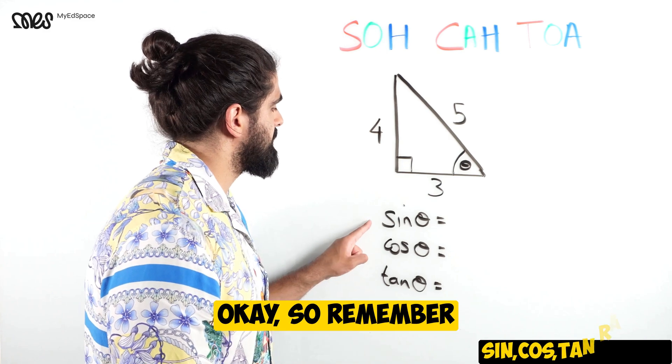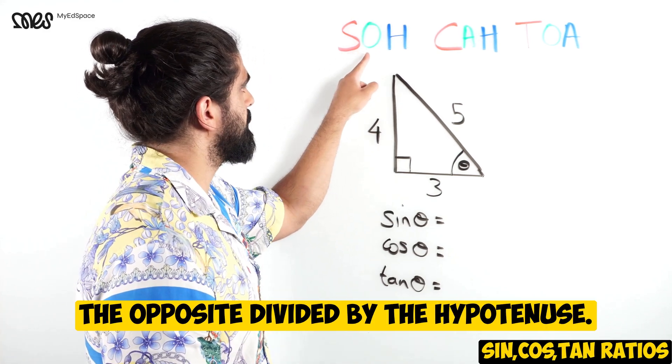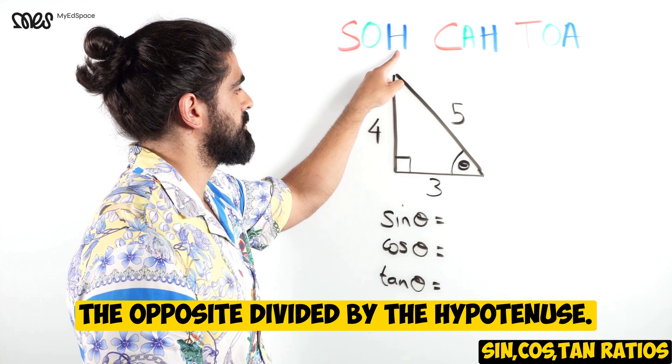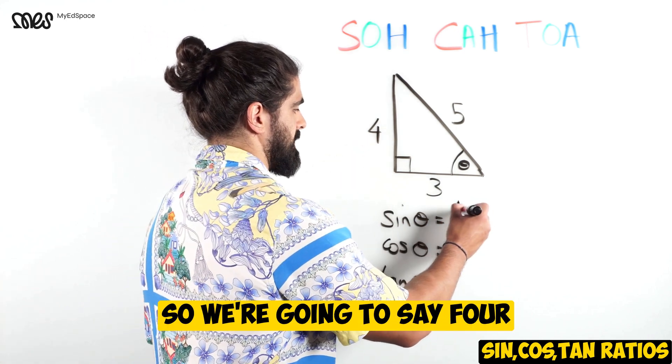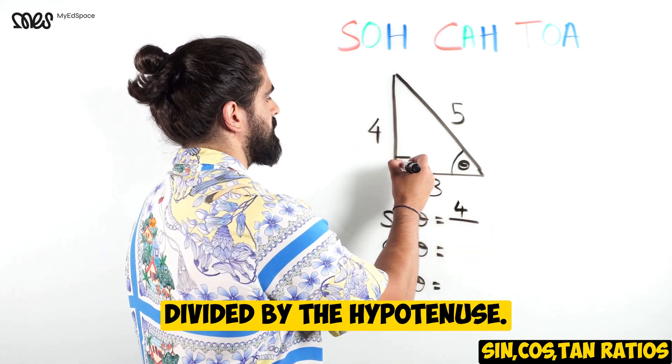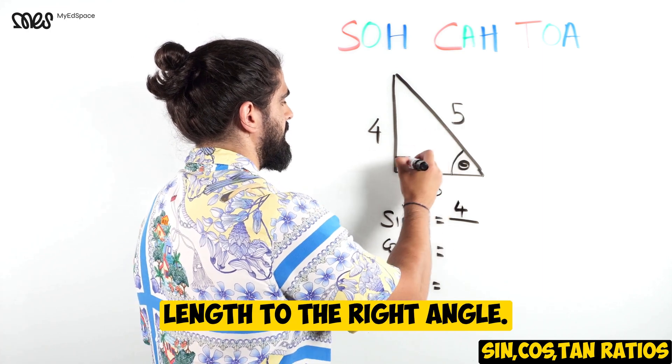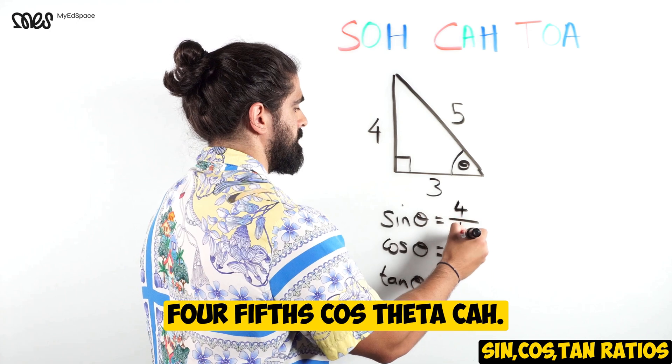Okay, so remember sine - SOH. Sine represents the opposite divided by the hypotenuse. The opposite to my angle theta is four, so we're going to say four divided by the hypotenuse. The hypotenuse is the opposite length to the right angle - four fifths.